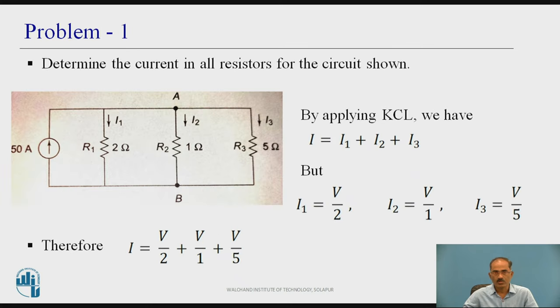Let us see one problem. Determine the current in all resistors for the circuit shown. There are three resistors, one 2 ohm, 1 ohm and 5 ohm, which are connected in parallel. Having a current source of 50 ampere. We need to find the current flowing across R1, which is I1 and across R2, which is I2 and across R3, which is I3.